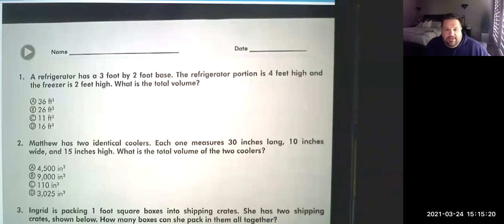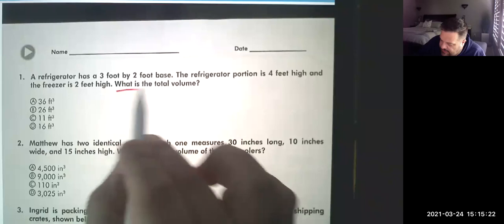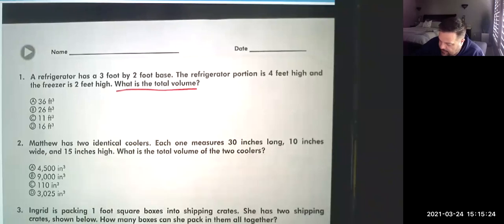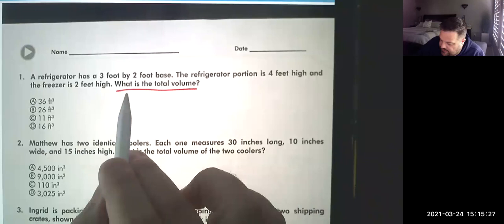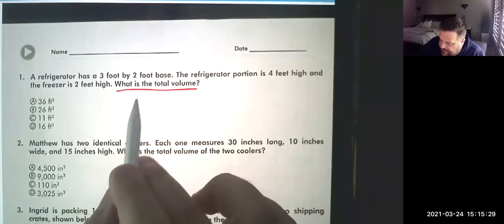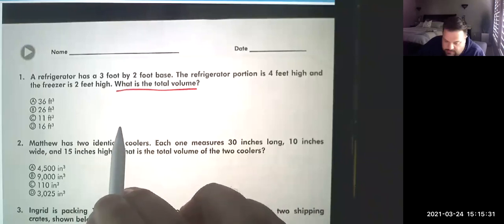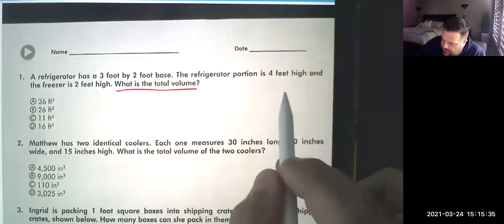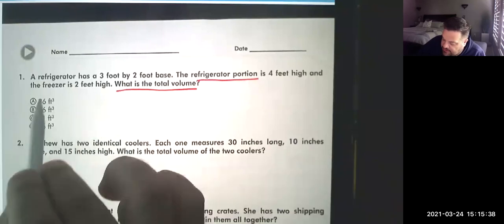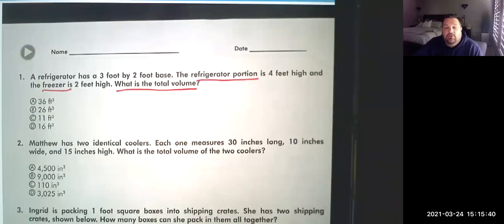Okay, so number one just wants you to find what is the total volume, right? So it has a three by two foot base. So that means, oh, it has a refrigerator portion. I should read these questions first and a freezer portion. So we want to know the total volume, we need to find both of those, right?